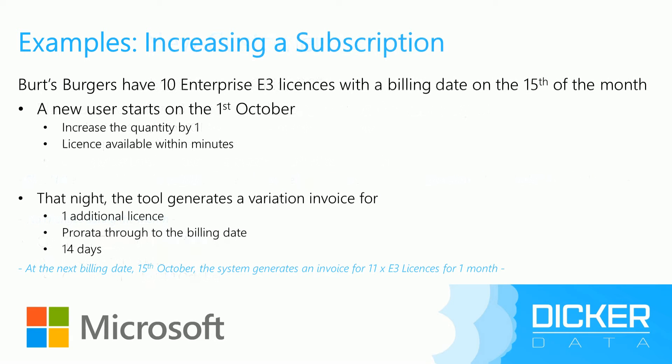So what happens if we increase the subscription? Vertsburgers have 10 E3 licenses from last month, with a billing date of the 15th. A new user starts on the 1st of October and we increase the quantity by 1. The license is made available straight within the Dicker Data Portal to the Office 365 tenant, and that night the tool generates a variation invoice — one additional license with a pro rata charge through to the next billing date, so one user charged for 14 days. At the next billing date on the 15th of October, the system automatically generates an invoice for 11 E3 licenses for one month.